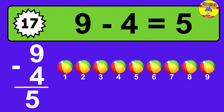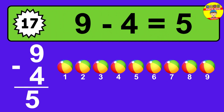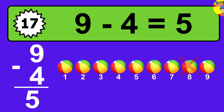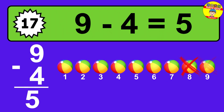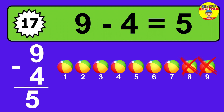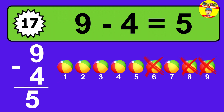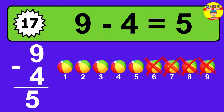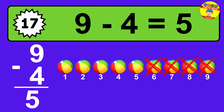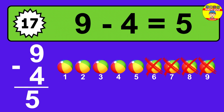Question seventeen: nine minus four equals what? The answer is nine minus four is five. Let's count it. One, two, three, four, five.